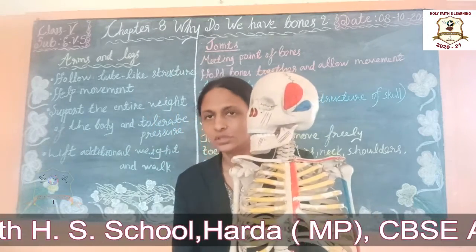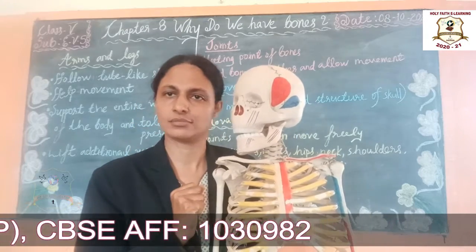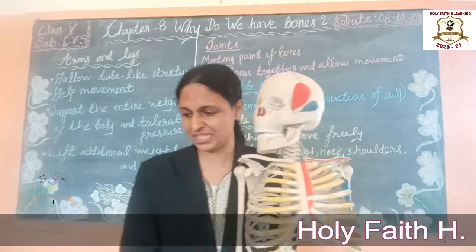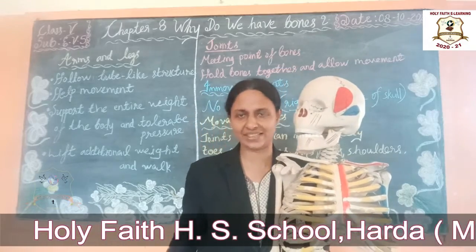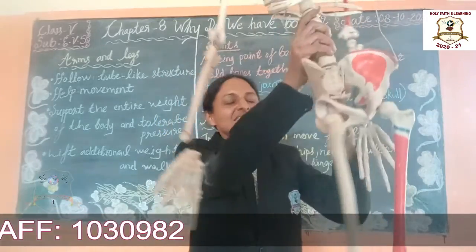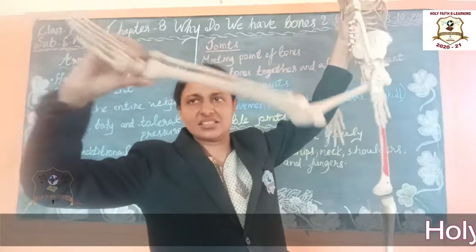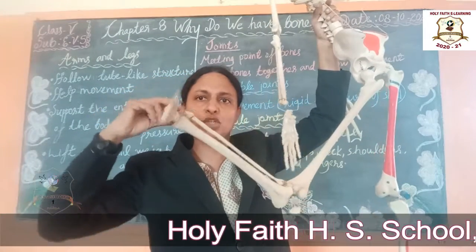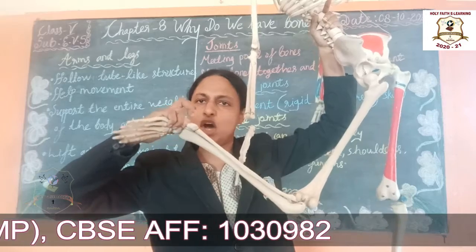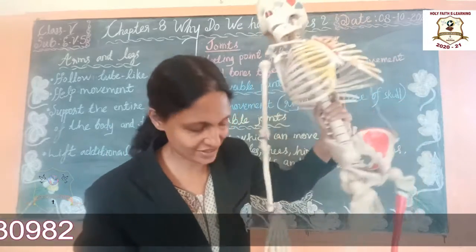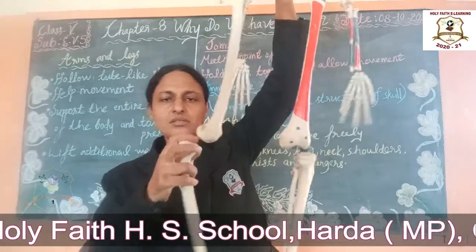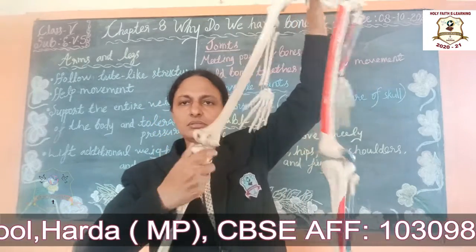Toes are the fingers of our feet. Ankles are the joints connecting the foot with the legs — there is a movable joint there. Knees — this part of our leg — is also a movable joint. And the hip joint is found at our waist area.